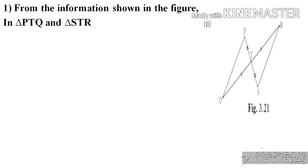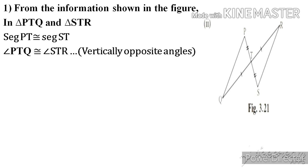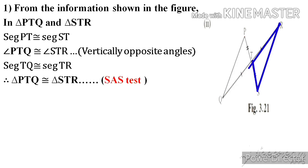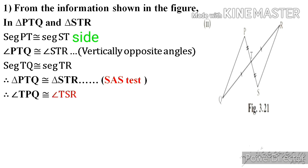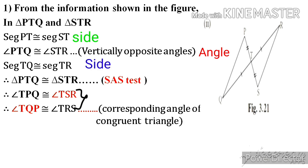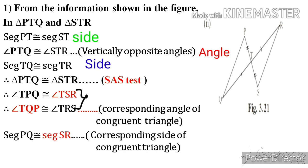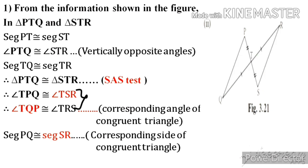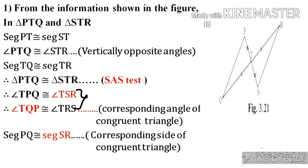The second activity: In triangle PTQ and triangle STR, segment PT is congruent to segment ST, angle PTQ is congruent to angle STR — they form vertically opposite angles — and segment TQ is congruent to segment TR. Therefore, triangle PTQ is congruent to triangle STR by SAS test. The remaining congruent parts: angle TPQ is congruent to angle TSR, angle TQP is congruent to angle TRS — corresponding angles of congruent triangle — and segment PQ is congruent to segment SR by corresponding sides of congruent triangle.